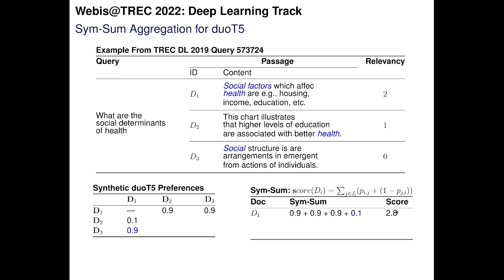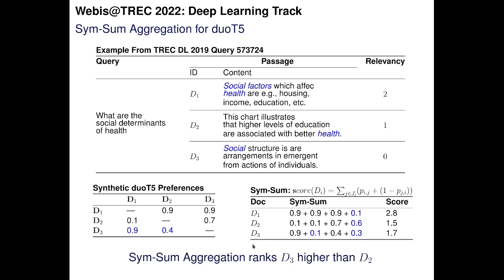Summing up the matrix gives a score for document D1 of 2.8. We do this for all remaining document pair preferences. In this example, because the preference between D3 and D1 is noisy, document D2 gets a lower score than document D3 — D3 gets 1.7 and D2 gets 1.5. So the symmetric sum aggregation would rank D3 higher than D2.